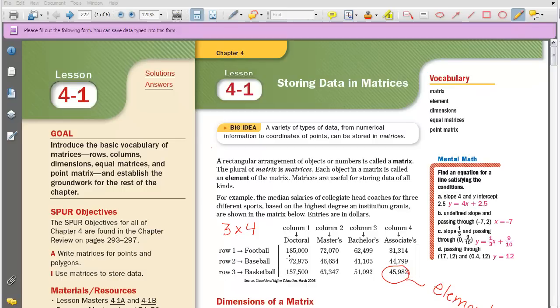Before we begin this lesson, we need to define what it is to be a matrix. All a matrix is is a rectangular arrangement of objects or numbers. And if I have more than one matrix, we use the plural, which would be matrices.